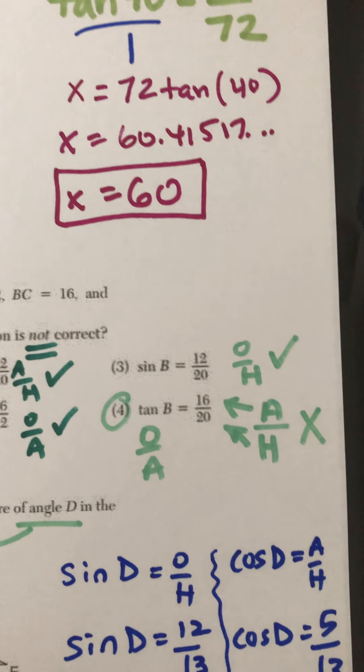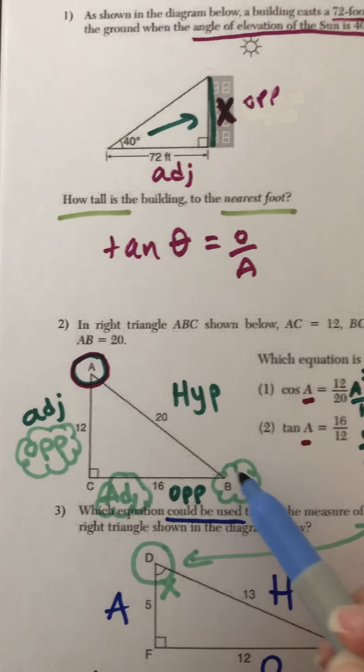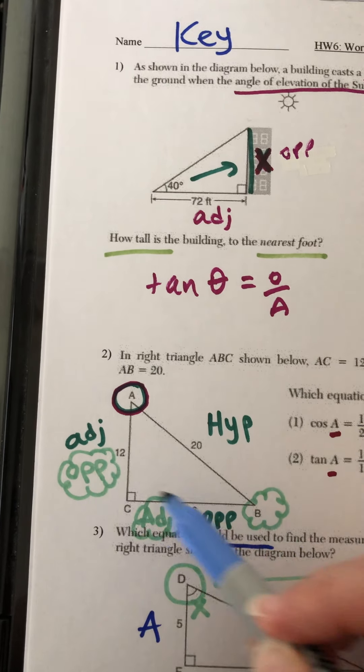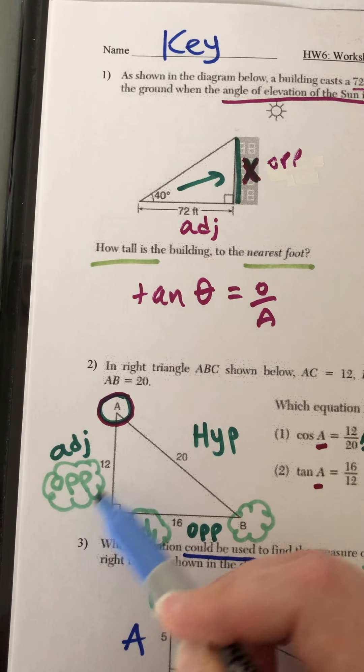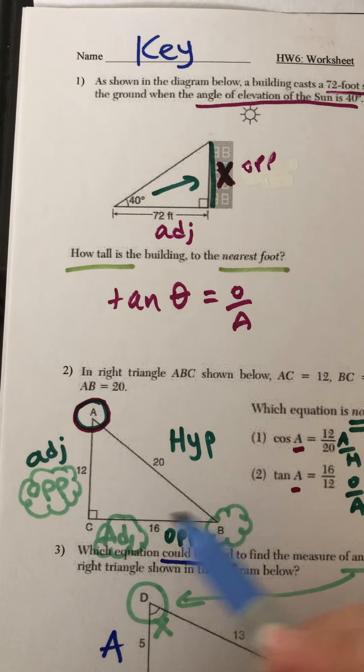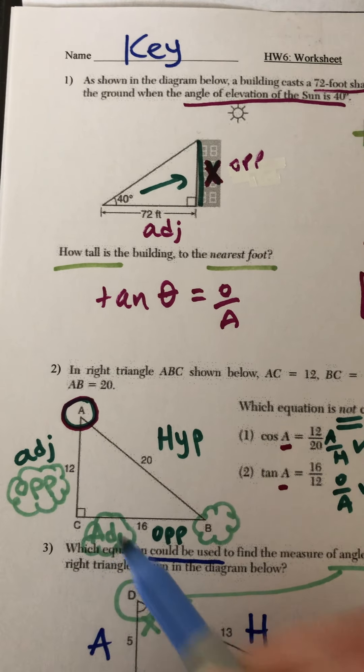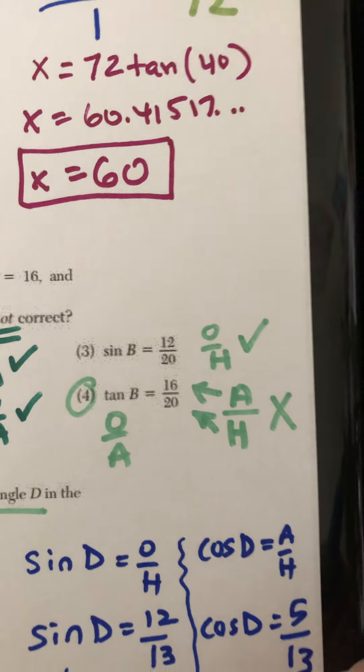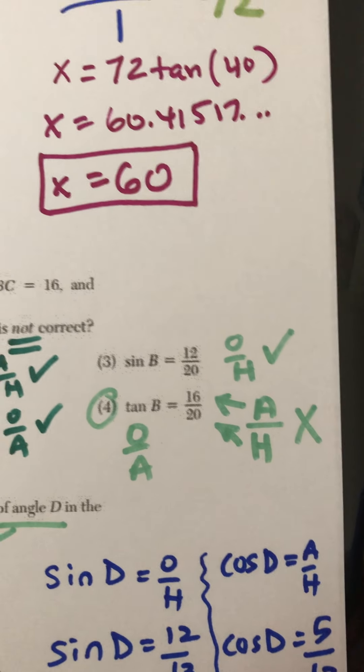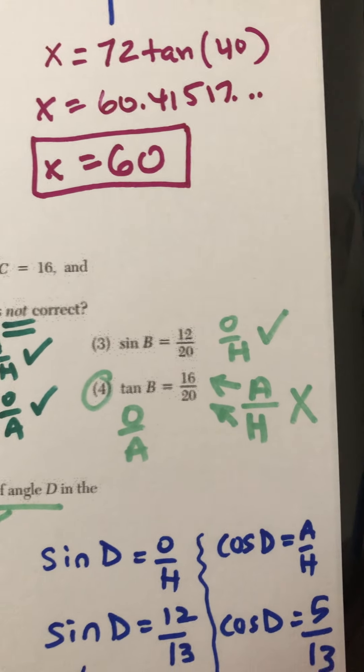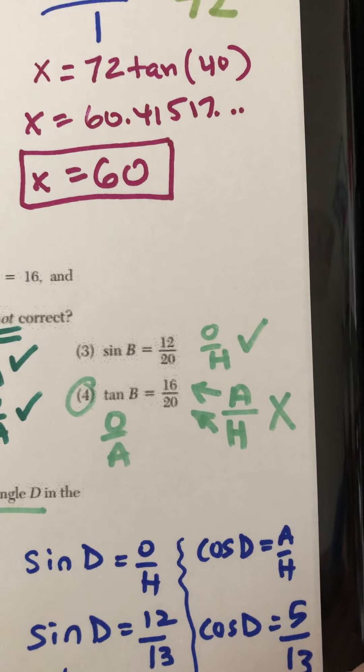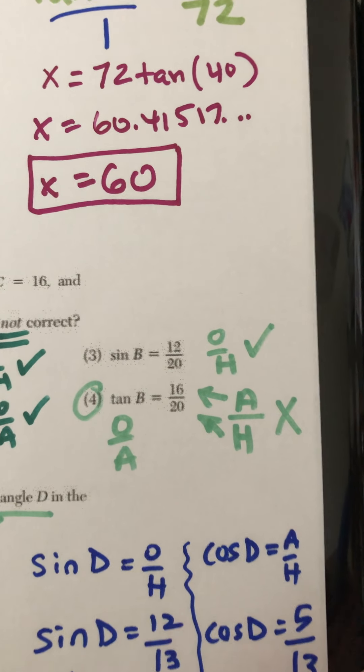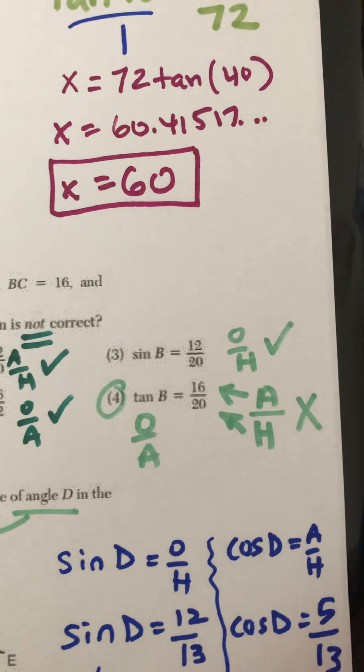Both sine B and tan B are involving angle B. Now that's all in the squiggly. Opposite, I put a squiggly to help you visualize. That's opposite. Adjacent to the B, again, squiggly to help you visualize. That's 16 is adjacent. When you come over here to your answer choices, sine B is properly set up, opposite over hypotenuse. But tan B is supposed to be opposite over adjacent. 16 being adjacent and 20 being hypotenuse is not correct. That's why 4 is wrong.